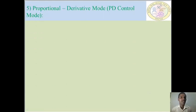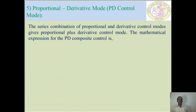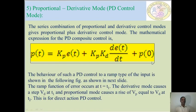Next is the proportional derivative mode, or PD mode controller. This series combination of proportional and derivative controller modes is the proportional plus derivative control mode. The mathematical expression for the PD composite control is: P(t) = Ap·e(t) + Ap·Kd·(de(t)/dt) + P(0).